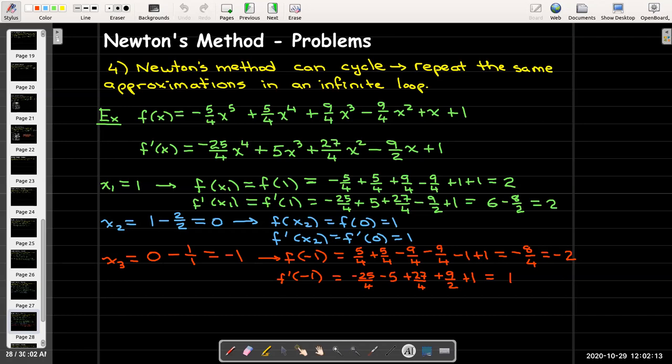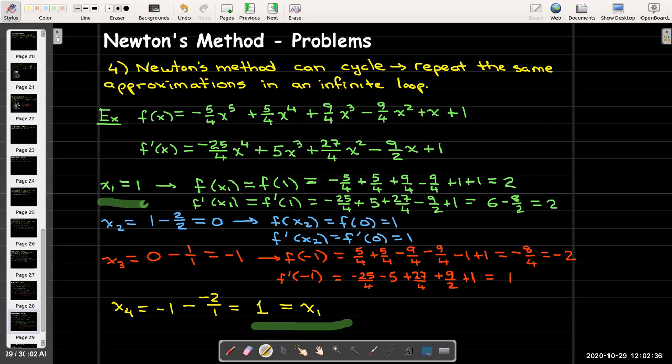So again, we can evaluate the function and the derivative at this new approximation, negative 1. So I get the function value negative 2 and the derivative value is positive 1. So my fourth approximation then would be negative 1 minus negative 2 over 1. That would be negative 1 plus 2, which is 1. And that is exactly the same as the initial approximation. So then I would just start cycling through these same approximations. I would get 1, then 0, then negative 1, and then back to 1 again.